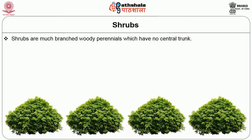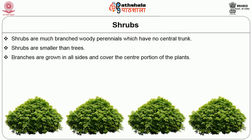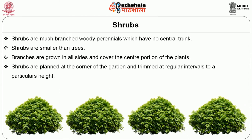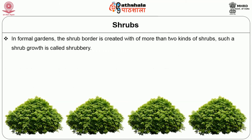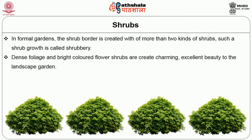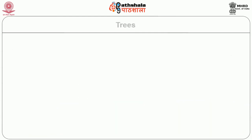Shrubs are much-branched woody perennials which have no single central trunk. Shrubs are smaller than trees; branches grow on all sides and cover the centre portion of the plant. Shrubs are planted at the corners of the garden and trimmed at regular intervals to a particular height. They also form borders of footpaths. In formal gardens, the shrub border is created with more than two kinds of shrubs — such a growth is called shrubbery. Dense foliage and bright-coloured flower shrubs create charming, excellent beauty in the landscape garden, and shrubs are always resistant to pests and diseases.